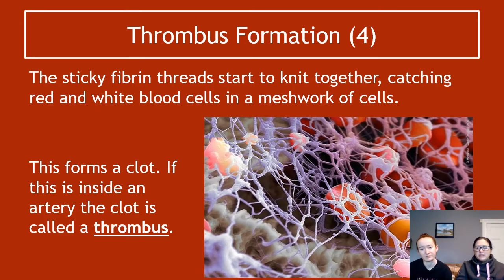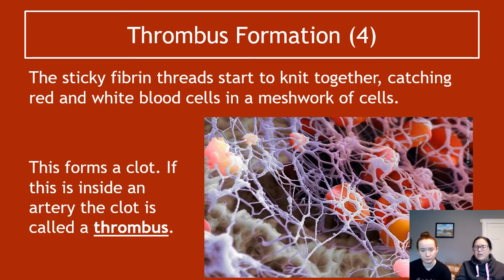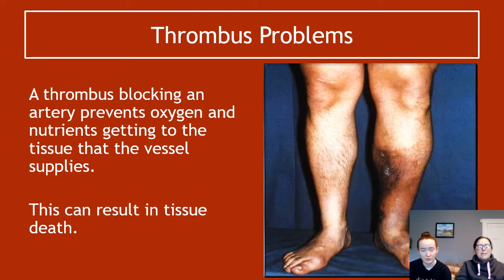This clotting process happens any time you get any kind of injury. For example, if capillaries burst from a bruise or you cut your finger, this same action clots those vessels and prevents you from bleeding out. The location of the clot is important: if the clot happens inside an artery we call it a thrombus; if it happens on your finger we call it a scab.